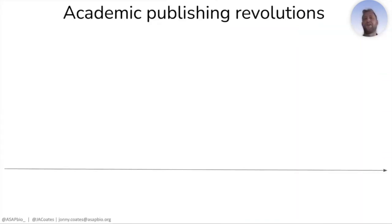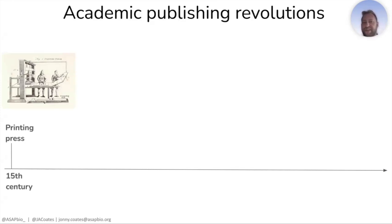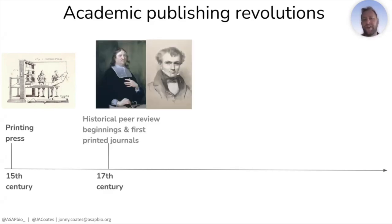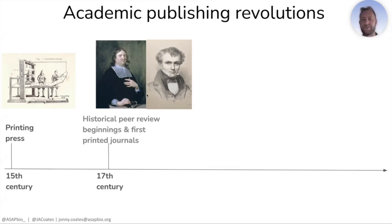I want to start with a brief overview of some of the big revolutions in academic publishing. A sensible starting point is the printing press — a fairly obvious revolution that allowed the wide, easy dissemination of printed materials instead of copying everything by hand. We then skip forward to the 17th century, where the next big revolution happened: the historical beginnings of peer review and the first printed journals appearing.